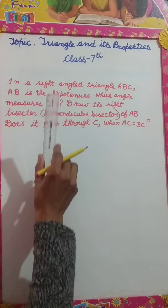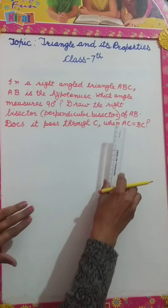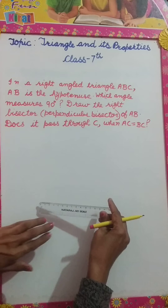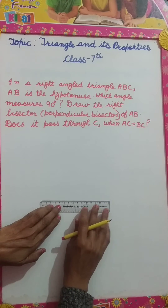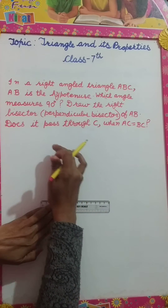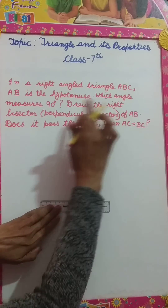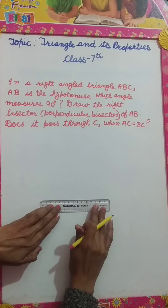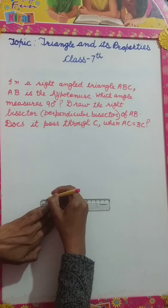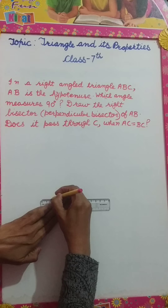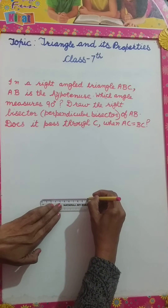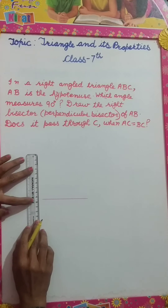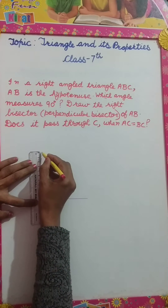Let's draw a triangle ABC where AC should be equal to BC. I have to take the hypotenuse on this side because AB is the hypotenuse. This is BC — I am taking BC equal to 10, and AC should also be equal to 10, so this is also 10.